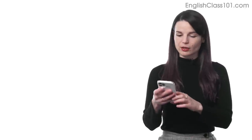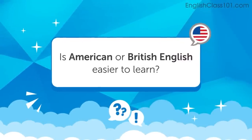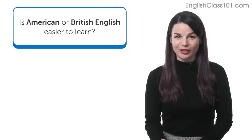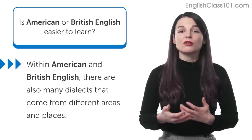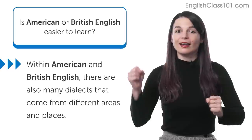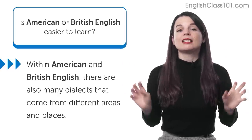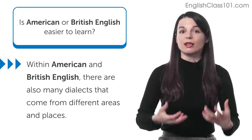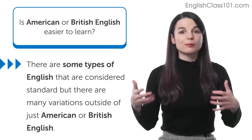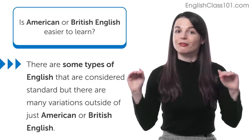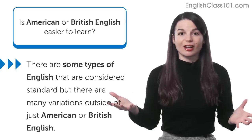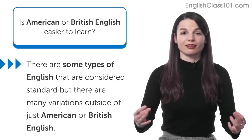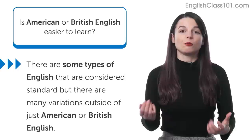Next question comes from Dashrath. Dashrath asks: which English is easier to learn, American or British? Interesting question. Well, we can't say one is easier than the other — they're both forms of English. Inside both American and British English, there are many different dialects and ways of speaking. There are also Australian, Irish, Scottish, and many other forms of English. It's really hard to say one is easier to learn than another.